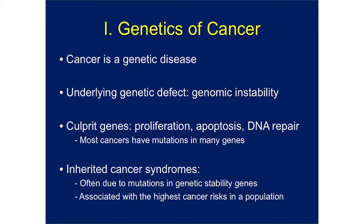The inherited cancer syndromes that I'll touch on today are often due to inherited mutations in genes that are important to maintain stability in the genome. These are syndromes that are associated with the highest cancer risks in a population.